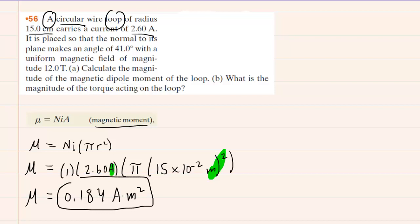That completes part A. We'll move on to part B, which asks us for the magnitude of the torque acting on the loop. To make that calculation, we apply this formula here. We can see that the torque on a current carrying loop that is placed in a magnetic field is equal to the magnetic moment multiplied by the magnitude of the magnetic field and then multiplied by the sine of an angle.